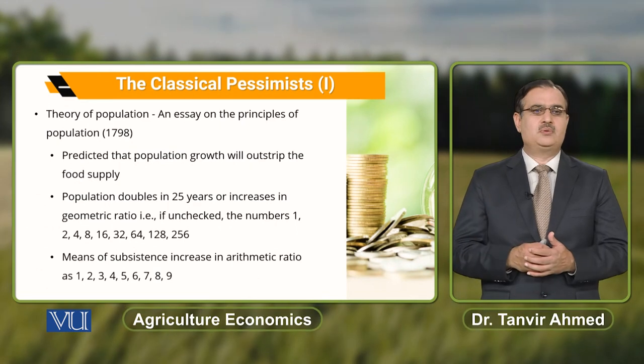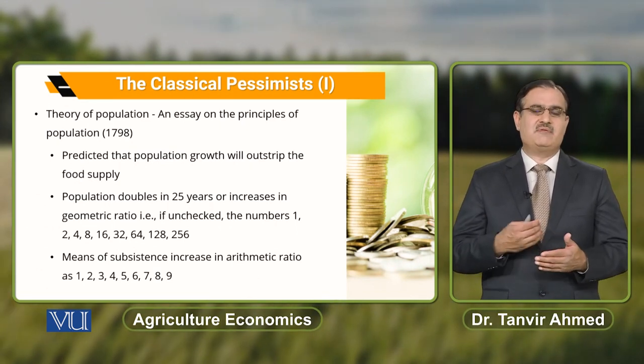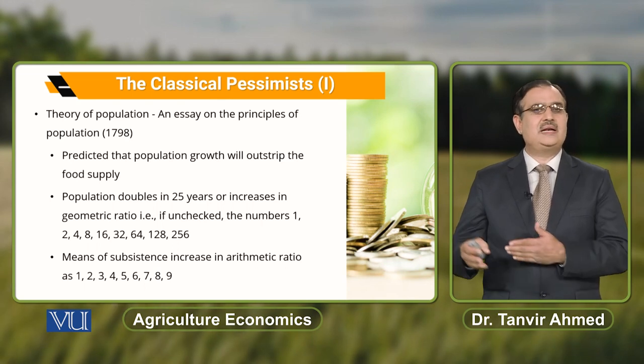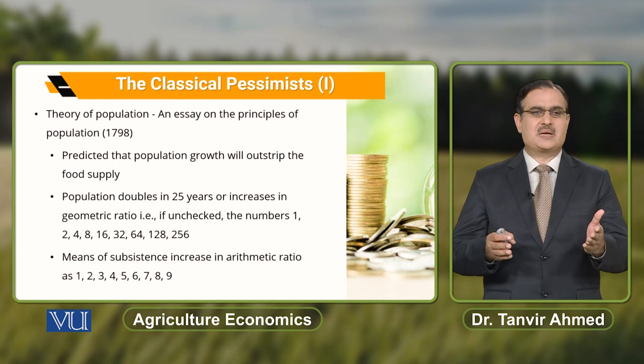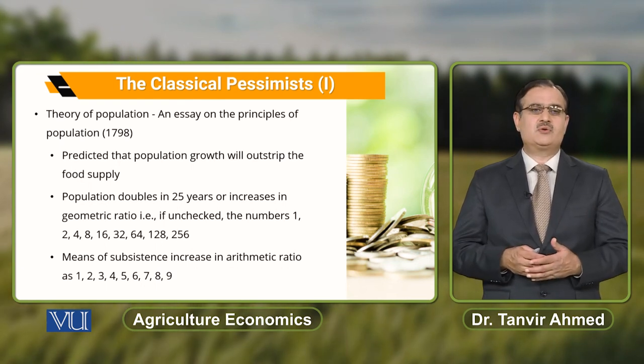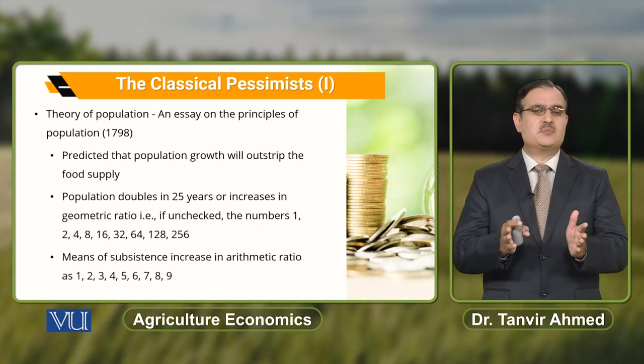Now, when we talk about the theory of population, we talk about Malthus's theory of population. According to Malthus, population doubles every 25 years and increases at a geometric ratio. If there is no check on population growth, it grows 1 to 2 within 25 years, then 2 to 4 in the next 25 years, and so on: 1, 2, 4, 8, 16, 32, 64, 128, 256 — all within a time frame of 200 years.